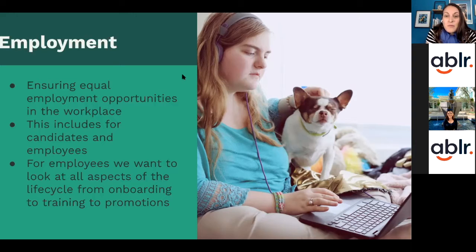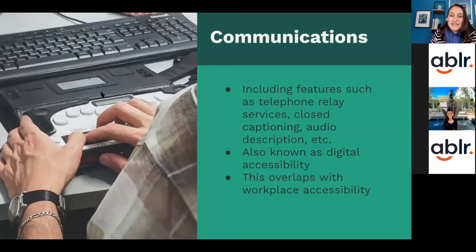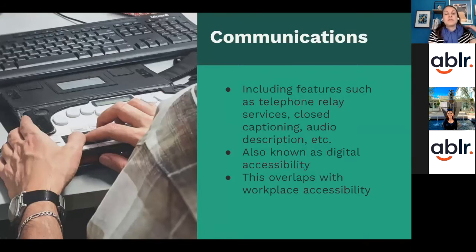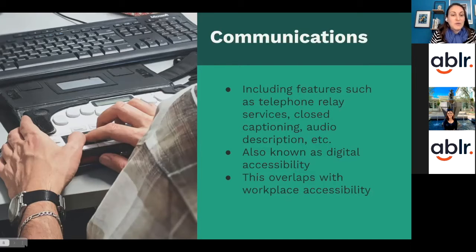Here we have a picture of a woman — she is white with light brown hair and is working on her laptop wearing headphones, sitting with her dog. For the communications piece, this includes features such as telephone relay services, closed captioning, audio descriptions, and more — looking at all the different ways we communicate and ensuring they're accessible. We also call this digital accessibility, and it overlaps with workplace accessibility because we want to ensure that systems used to communicate with employees are accessible — things like making sure our website and the employment application are accessible. Here we have a picture of a person's hands using an assistive device on their computer.